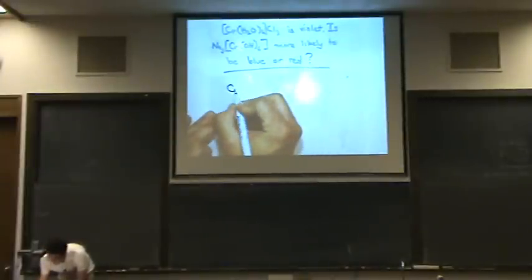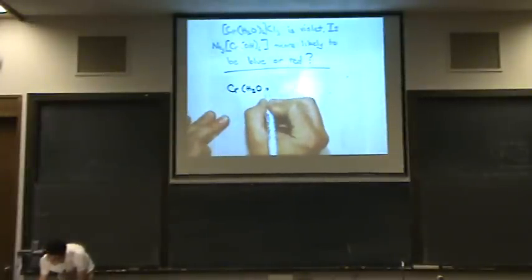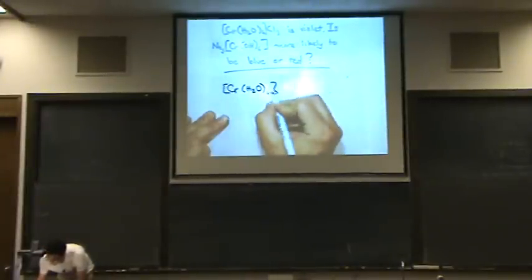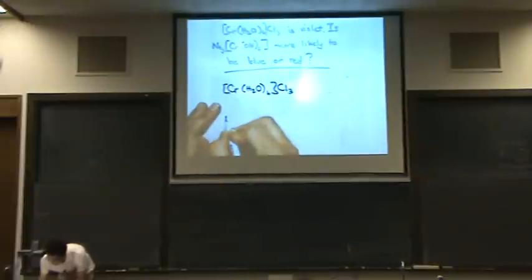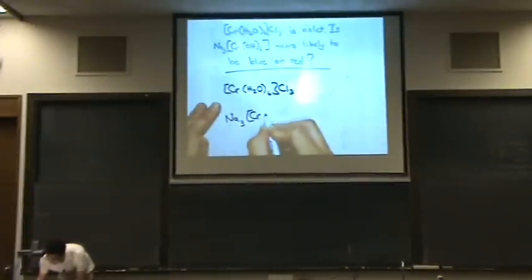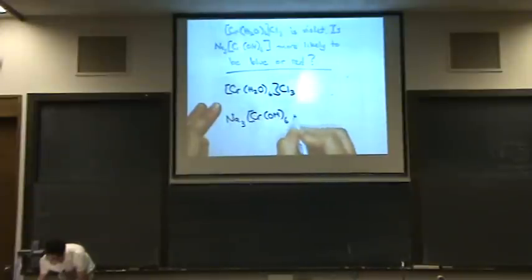Okay, so we've got the CrH2O6Cl3. We've got the Na3, Na is the counter ion, CrOH6.